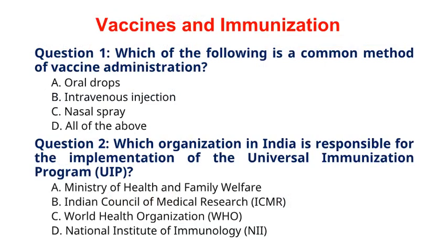Question 1. Which of the following is a common method of vaccine administration? A. Oral drops. B. Intravenous injection. C. Nasal spray. D. All of the above. The correct answer to question 1 is option D, all of the above. Vaccines can be administered through various routes, including oral drops, intravenous injection, and nasal spray, depending on the type of vaccine and the target disease.